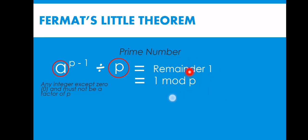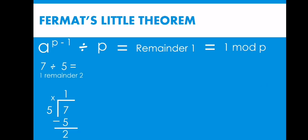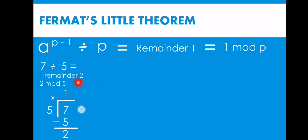For those not yet familiar with mod, this is what we call modulo. We use modulo in Fermat's Little Theorem. To understand it easily, let's look at a basic example of finding the remainder when dividing two small numbers. For example, 7 divided by 5: 1 times 5 is 5, and 7 minus 5 gives us 2. So our answer is 1 remainder 2, or 2 modulo 5 — where 2 is the remainder and 5 is the divisor.